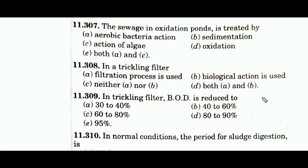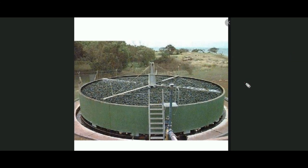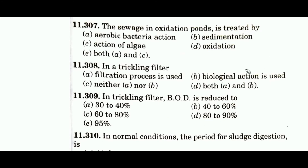Question 308 asks which process is used in a trickling filter — filtration or biological action. Both occur in a trickling filter. Filter media uses large-size aggregates. Sewage is applied through sprinklers at a very low rate. Organic matter and microorganisms attach to the filter media, where aerobic decomposition occurs due to the large area and available atmospheric air. Clear water percolates through. Both filtration and biological action occur, so the answer is option D.